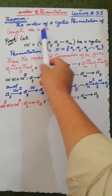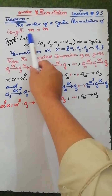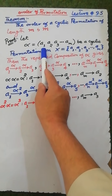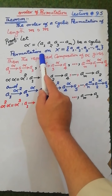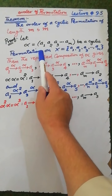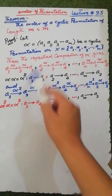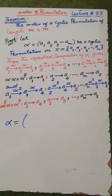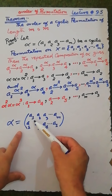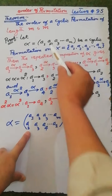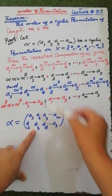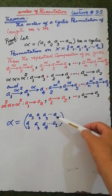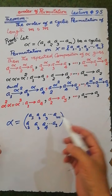Bismillahirrahmanirrahim. Next theorem: the order of a cyclic permutation of length m is m. Proof: Let alpha be a cyclic permutation of length m on a non-empty set X, such that the elements of the cyclic permutation are a1, a2, ..., am. That is, alpha maps a1 to a2, a2 to a3, a3 to a4, and so on, and am to a1.